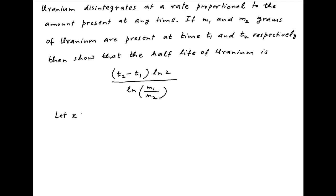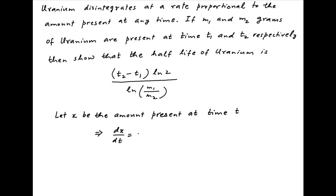Let x be the amount of uranium present at any time t. We are given that the rate of disintegration, which is dx/dt, is proportional to the amount of uranium present, which is x. Therefore we can write dx/dt is equal to minus kx, where k is the constant of proportionality. The minus sign indicates that as t increases, x decreases.